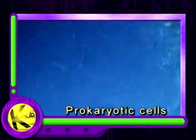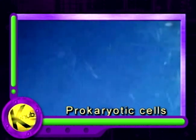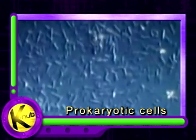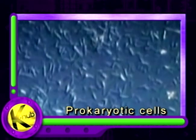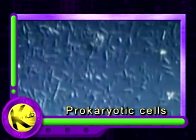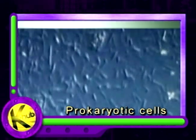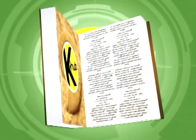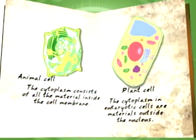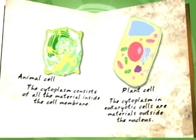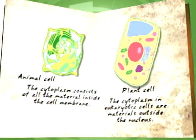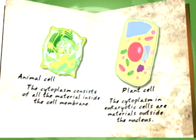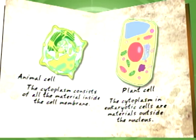In prokaryotic cells, it is found in an area called the nucleoid and is not separated by membranes from the rest of the cytoplasm. The cytoplasm consists of all the materials inside the cell membrane and, in eukaryotic cells, outside the nucleus, which is itself contained by a membrane.